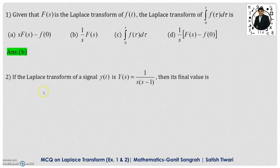Example number 2: If the Laplace transform of the signal y of t is y of s equals 1 upon s into s minus 1, then its final value is given by? We have four options. Here we will apply the final value theorem. You must know what is the final value theorem.